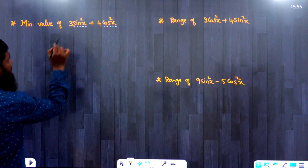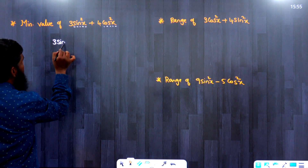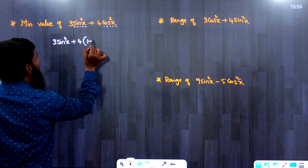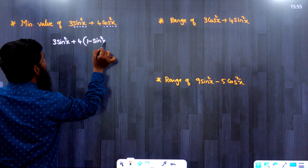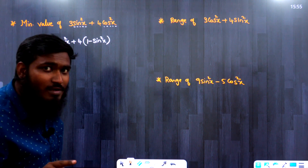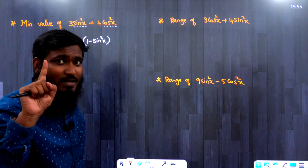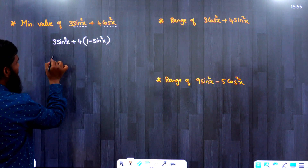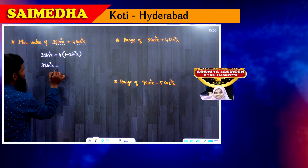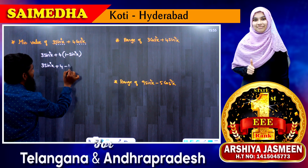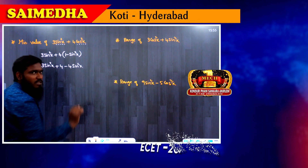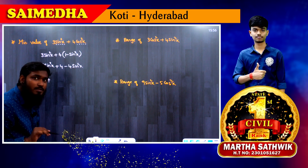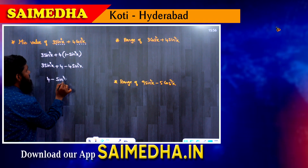We write 3sin²x as it is, plus 4, and in place of cos²x we write (1 − sin²x), because sin²x + cos²x = 1, so cos²x = 1 − sin²x. Multiplying out: 3sin²x + 4 − 4sin²x, which gives us 4 − sin²x.